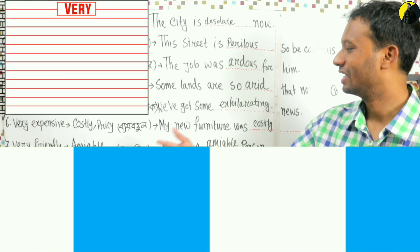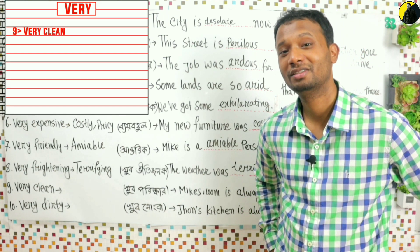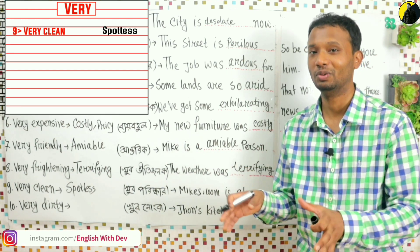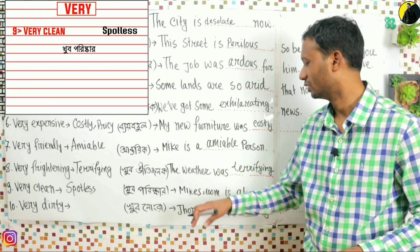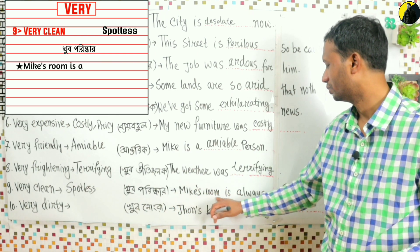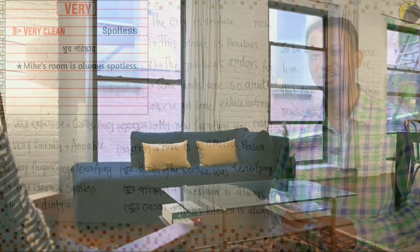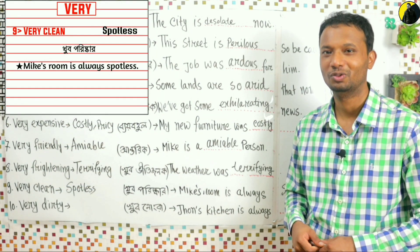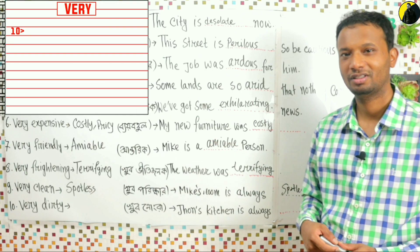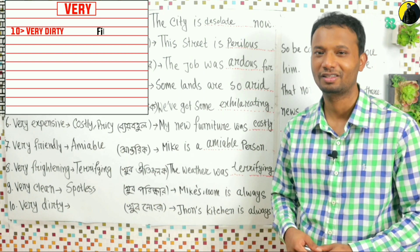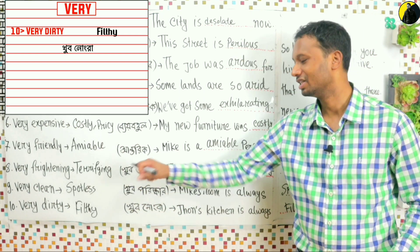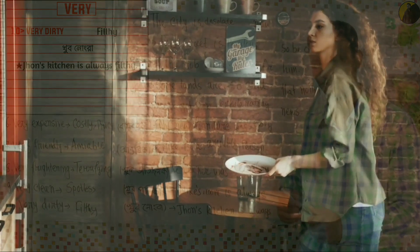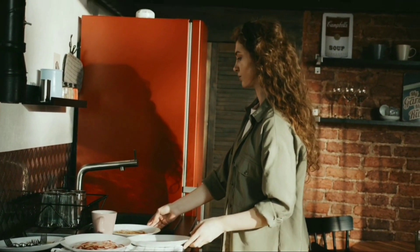Very clean — the advanced synonym is: spotless. For example: 'We should clean our room every day to keep it spotless.' Very dirty — the advanced synonym is: filthy. For example: 'John's kitchen is always filthy.'